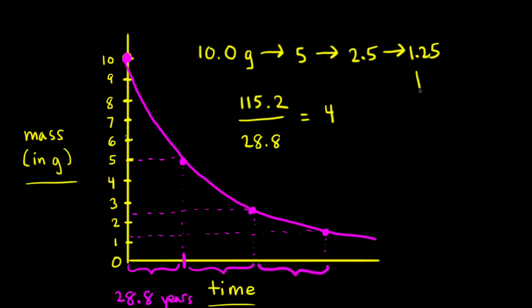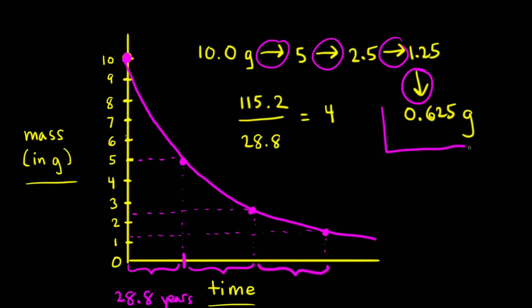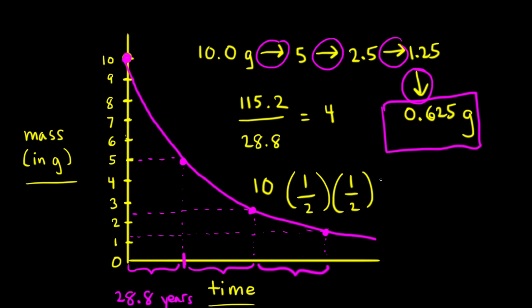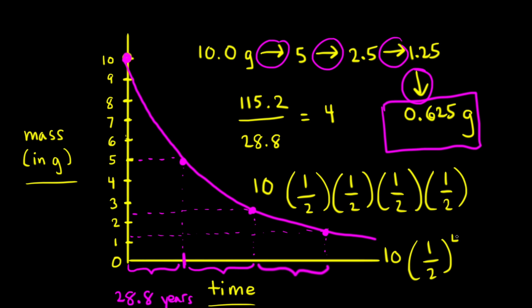One more half-life takes us to 0.625 grams — that's four half-lives total. So our final answer is 0.625 grams remaining after 115.2 years. Another approach is to start with 10 grams and multiply by one half four times, or write it as 10 times (1/2) to the fourth power. All these approaches give 0.625 grams of our radioactive isotope remaining after 115.2 years.